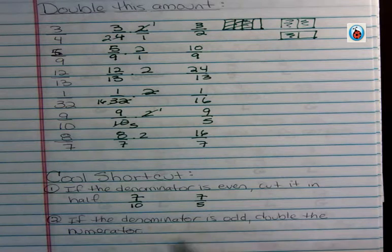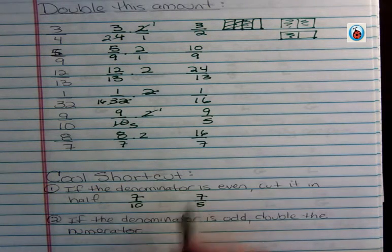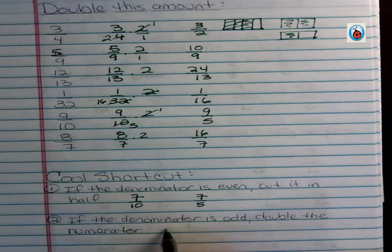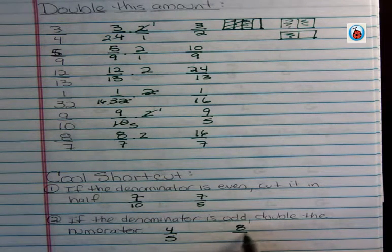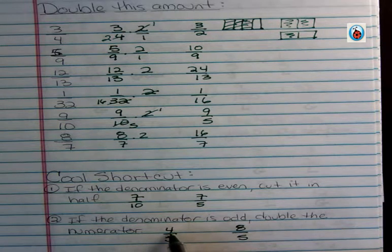If the denominator is odd, you double the numerator. So if I have something like four fifths, I want to double that numerator and I get eight fifths. You can see that four doubled is eight, right? So it's twice as much.